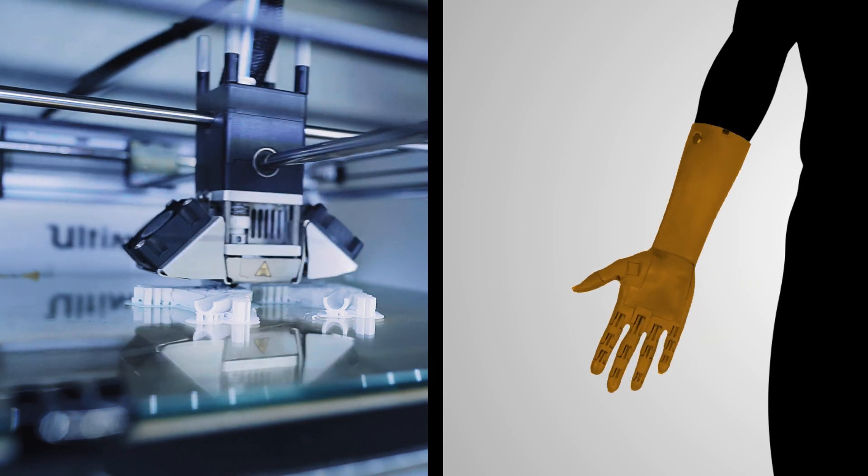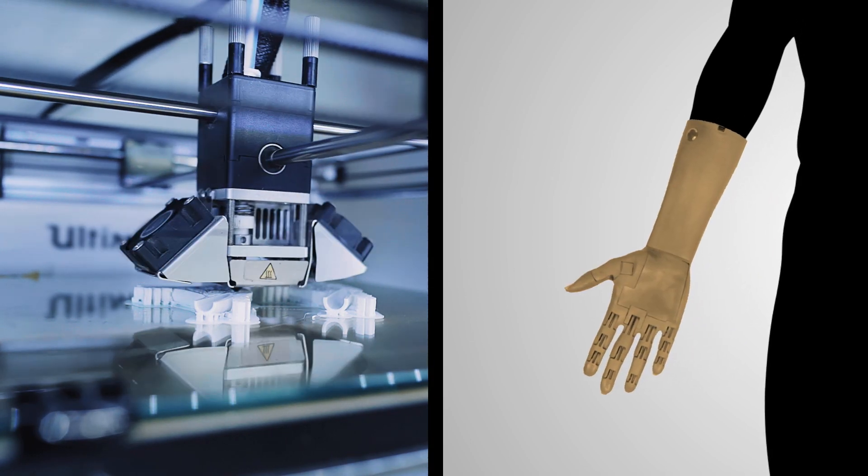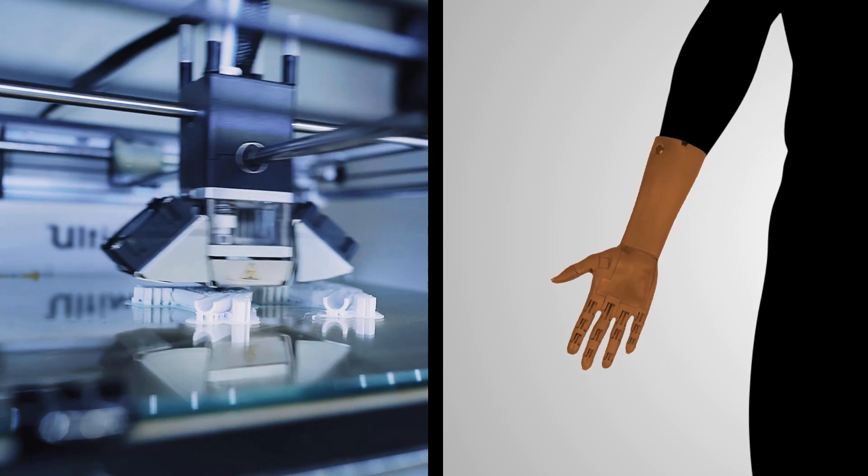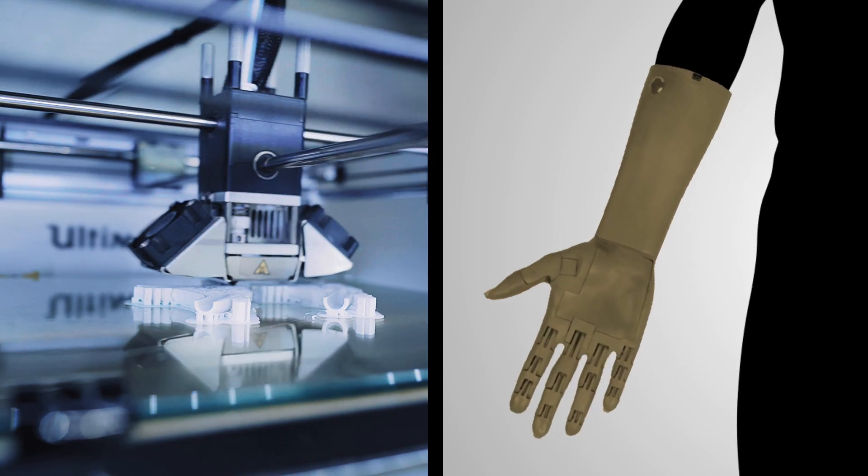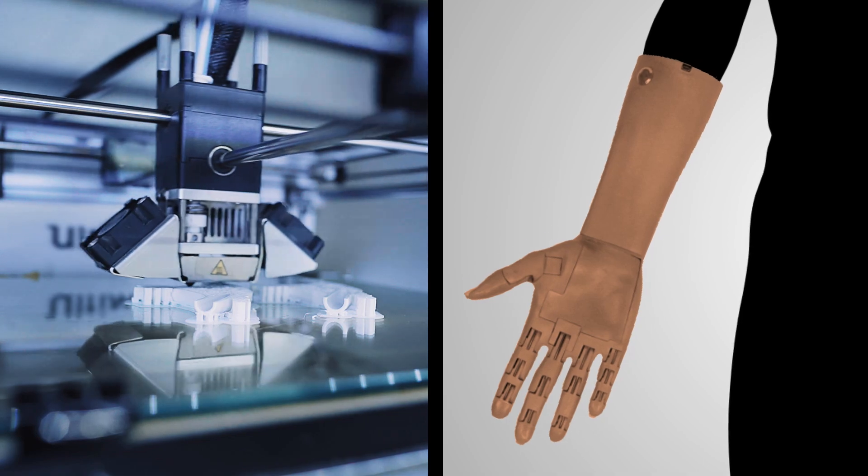After receiving the initial data, the company prints on a 3D printer and sends several test prosthetic products to the patient for fitting. This stage is repeated until the client selects the perfect arm for themselves.